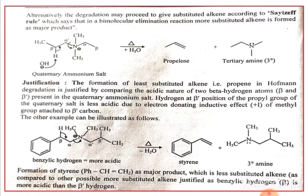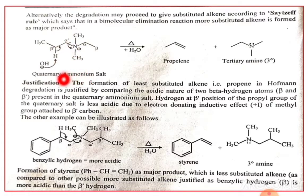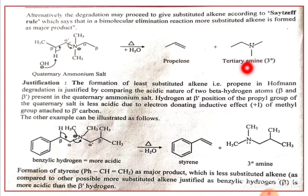Taking a specific example: in the quaternary ammonium salt, adjacent to nitrogen we identify alpha, beta, alpha-dash, and beta-dash positions. The base abstracts the more acidic beta proton. The bond shifts and we get the double bond; the C–N bond cleaves, giving propylene along with the tertiary amine. The question is: why does the base abstract the beta-dash proton rather than the beta proton?